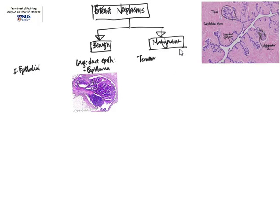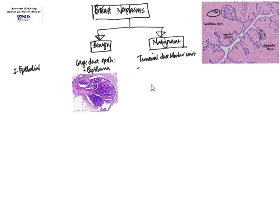Very importantly, there are some malignant tumors, and these do arise usually from the TDLU. We want to divide them into prognostically important groups — the two main groups being in situ versus invasive.